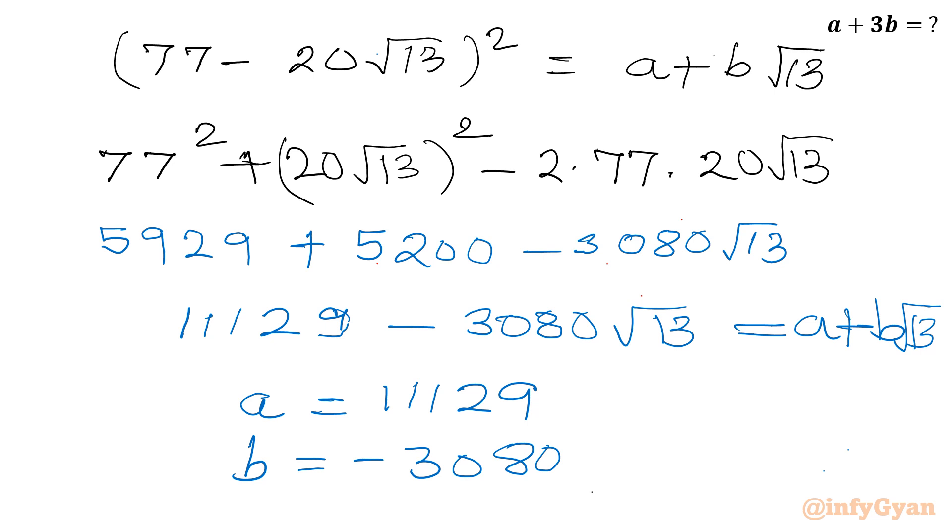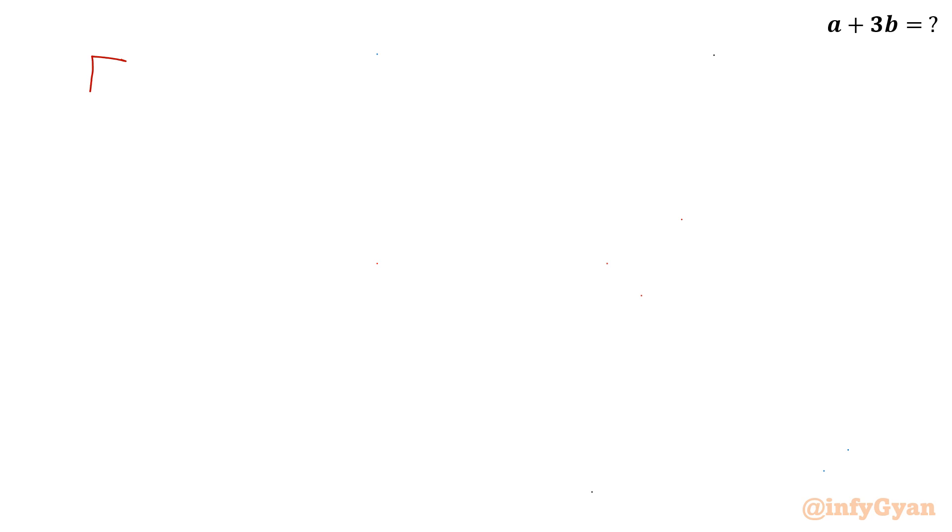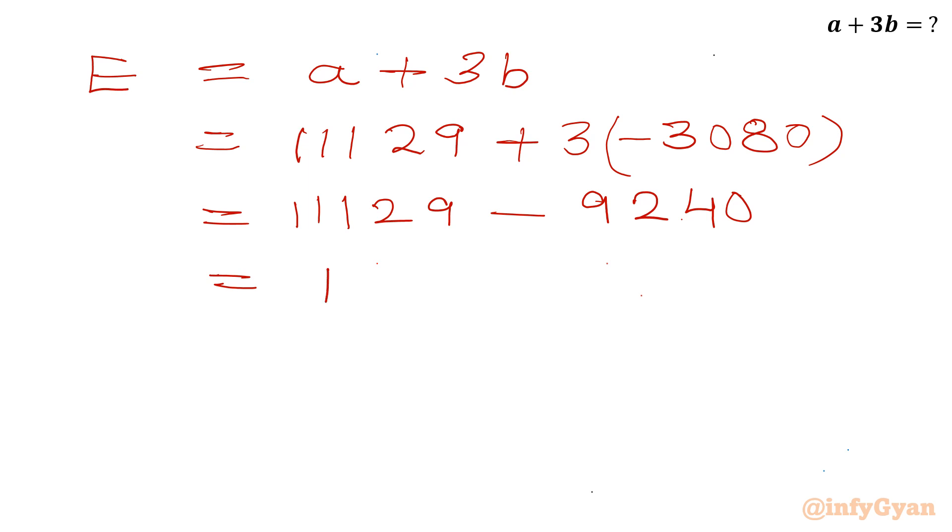Now we have to calculate our expression a plus 3b. So I will write our expression e equal to a plus 3b. A is equal to 11129. b is equal to negative 3080. Further I can write 11129, and this product will become 9240. And this difference if I will calculate 1889. So this is our final and ultimate answer for this problem.